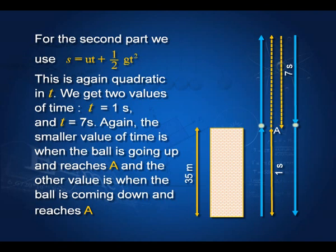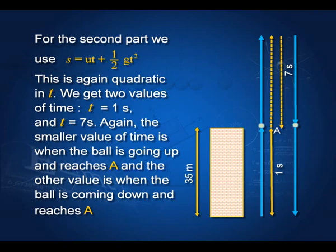For the second part — finding the time — we use s = ut + ½gt². Since this is quadratic in t, we get two values: t = 1 second and t = 7 seconds. Both are correct: 1 second is the time taken to reach 35 meters height while going up, and 7 seconds is the time for the ball to go up to the highest point and return back down to the same height of 35 meters.